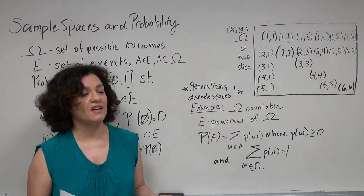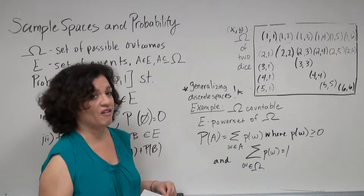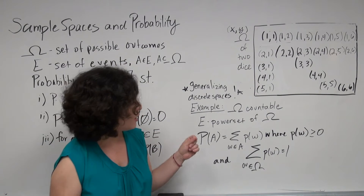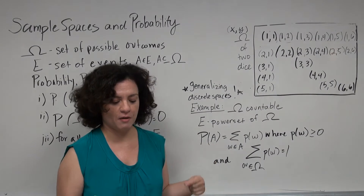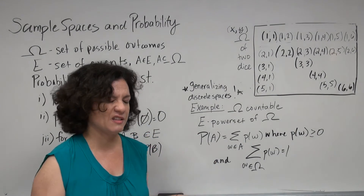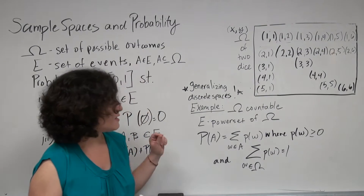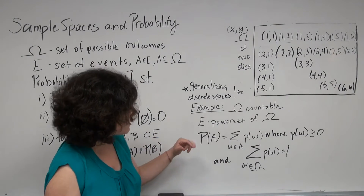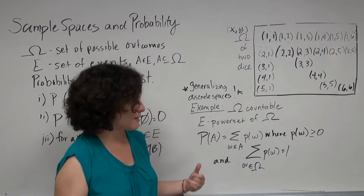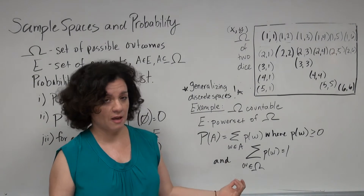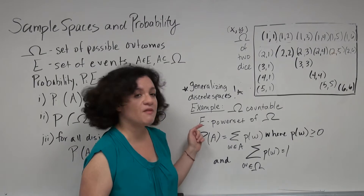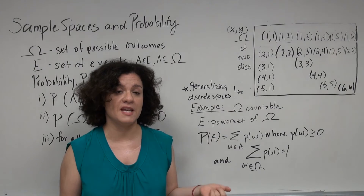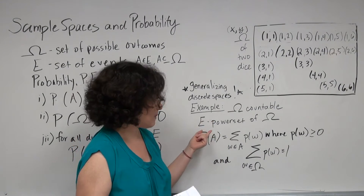The awesome thing about discrete spaces is that they generalize very readily, and we will most often be talking about discrete spaces. This is Example 1.1 from Rick Durrett's terrific book Probability Theory and Examples, second edition — I'll post a link in the comments below. In this example we discuss how to generalize discrete spaces. Our sample space is going to be countable, meaning finite or countably infinite, and our set of events is going to be the power set of the sample space — the set of all subsets.